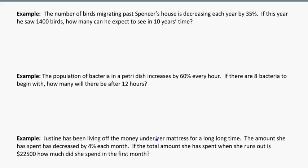Next example here. The number of birds migrating past Spencer's house is decreasing each year by 35%. So decreasing each year by 35%, because it's decreasing by a percentage, I'm going to assume here that we're talking about a geometric sequence. And it's decreasing, it's going down. If this year he saw 1,400 birds, how many can he expect to see in 10 years' time? So again, we're just going to start the sequence with the information I've been given. So I'm going to assume that this year is the first year.